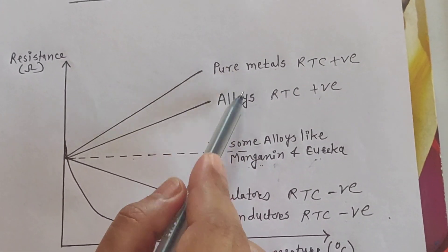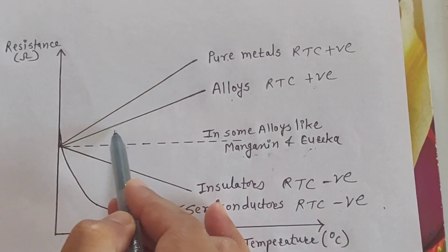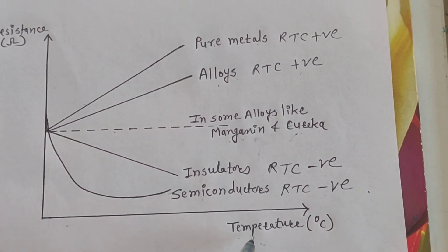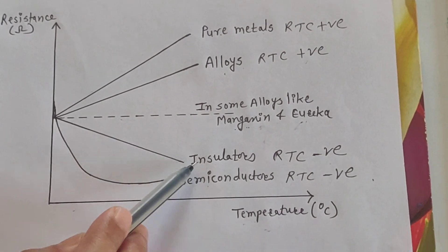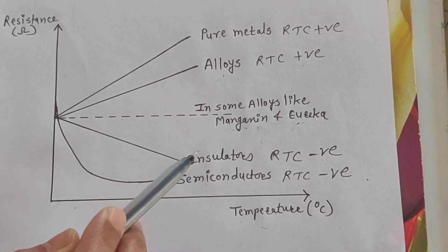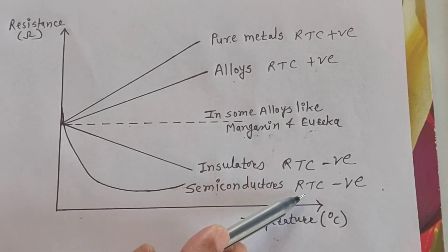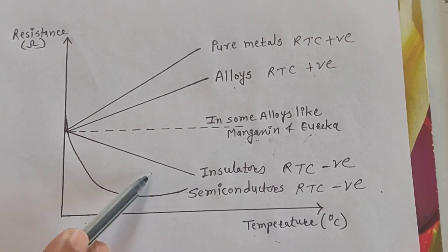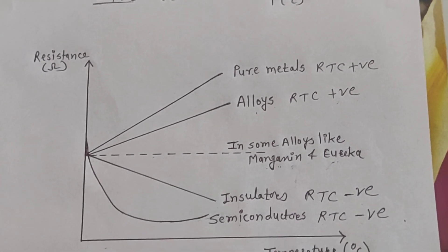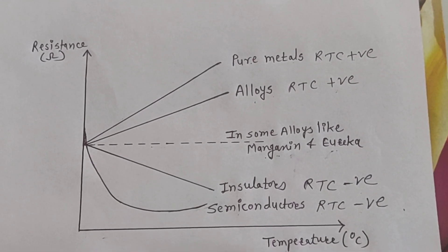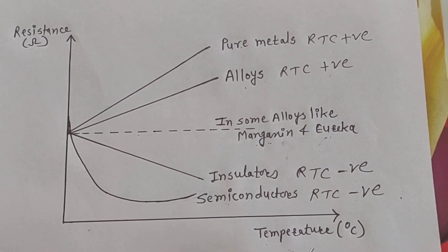In summary, for pure metal and alloy, RTC is positive because resistance increases with temperature. For insulators and semiconductors, RTC is negative because resistance decreases with temperature. This concludes the effect of temperature on resistance. Thank you.